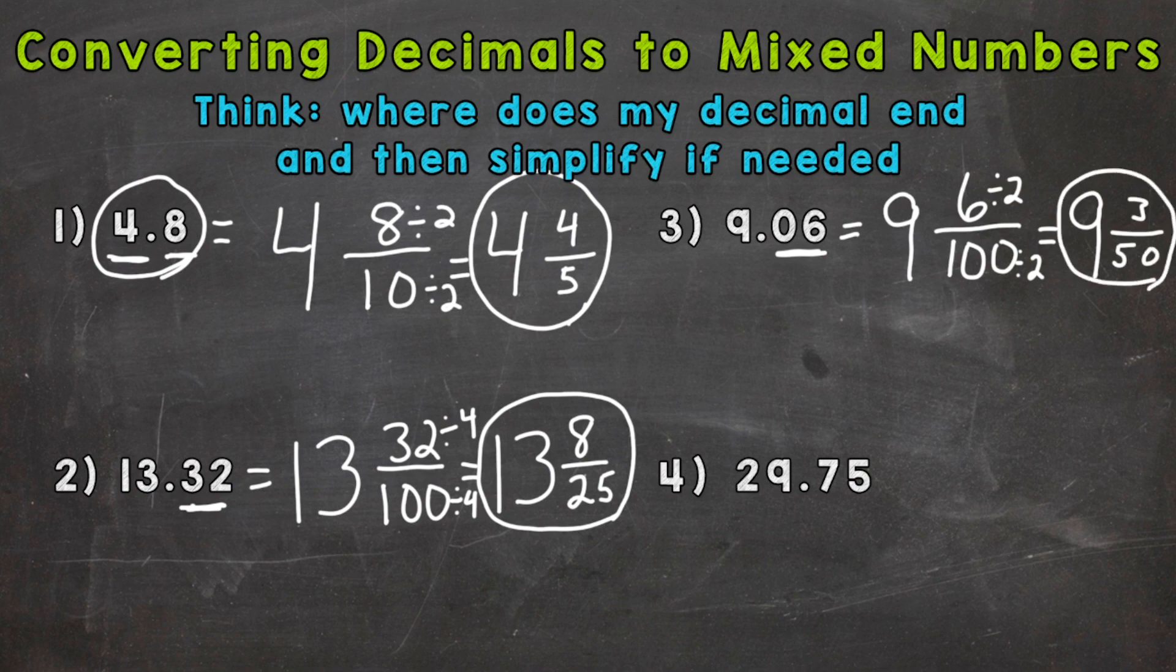And then lastly number four. We have 29 whole. And this goes to the tenths hundredths place. So hundredths is our denominator there. And the number to the right of the decimal is a 75. So 75 is our numerator.